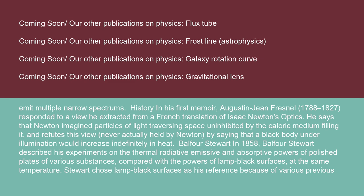History: In his first memoir, Augustin-Jean Fresnel (1788–1827) responded to a view he extracted from a French translation of Isaac Newton's Optics. He says that Newton imagined particles of light traversing space uninhibited by the caloric medium filling it, and refutes this view — never actually held by Newton — by saying that a black body under illumination would increase indefinitely in heat.